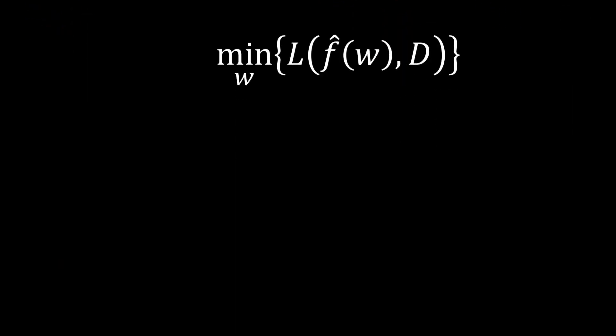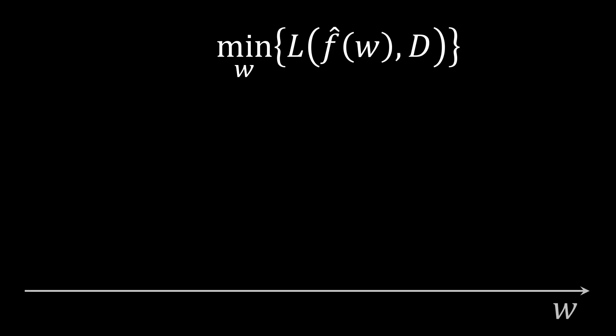To start, let us look at this problem a bit differently. Assume our function consists of a single weight value w. We plot all possible weight values w on the horizontal axis, and the loss with respect to that weight on the vertical axis.